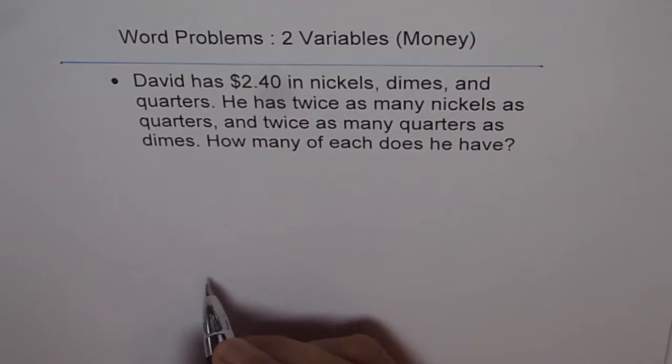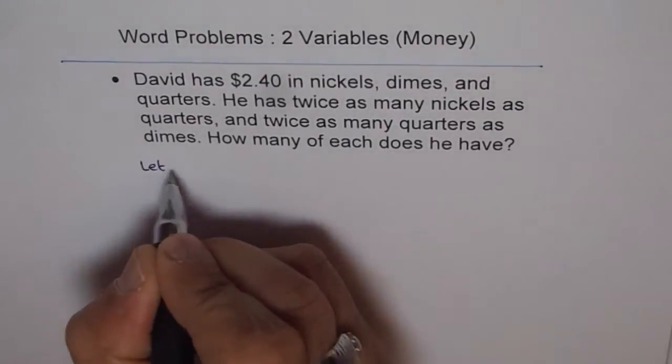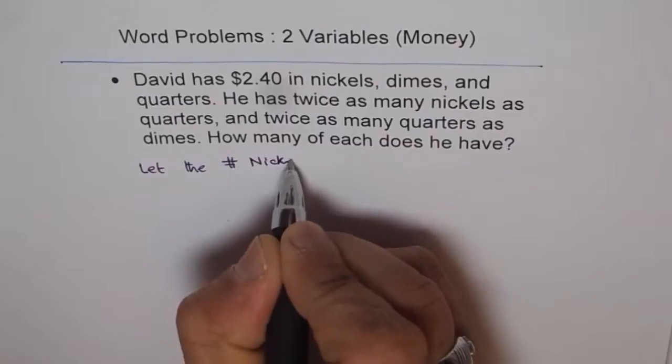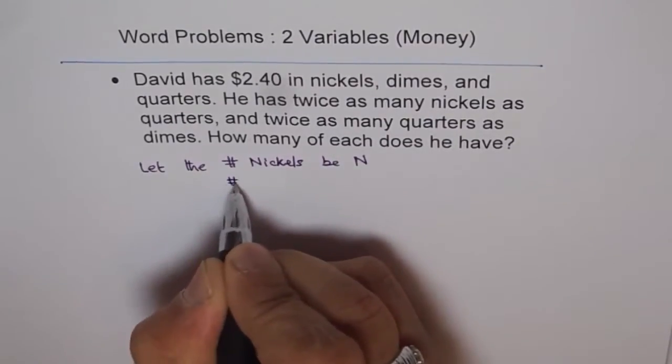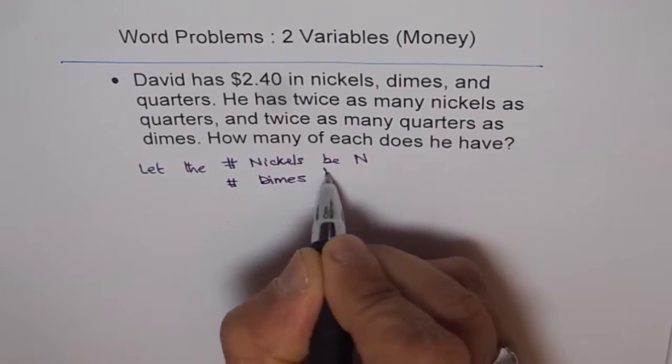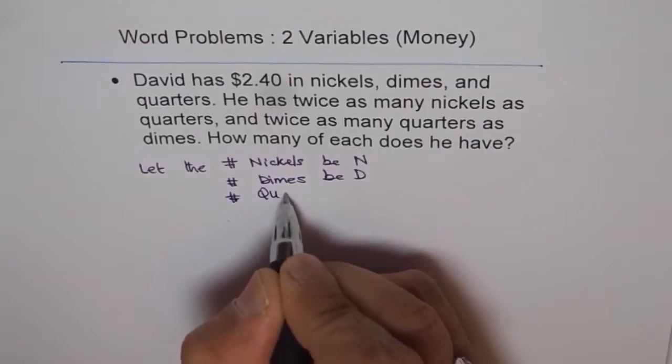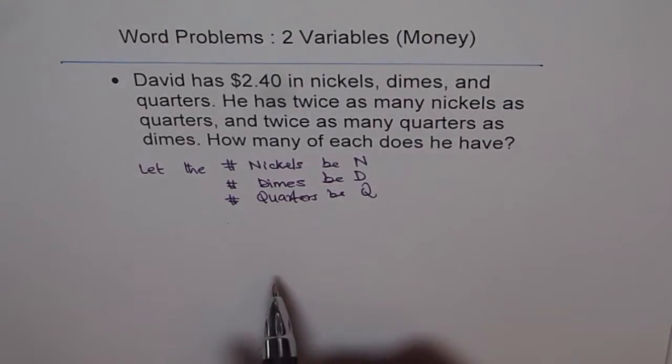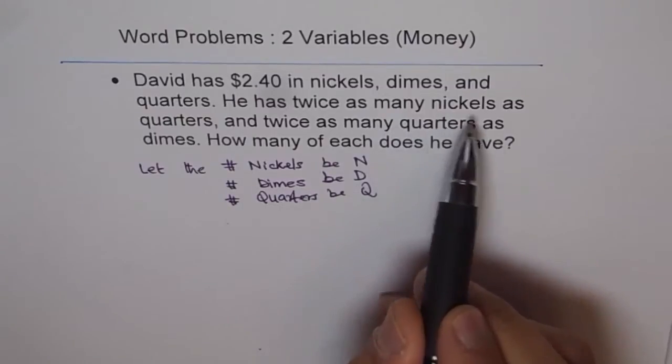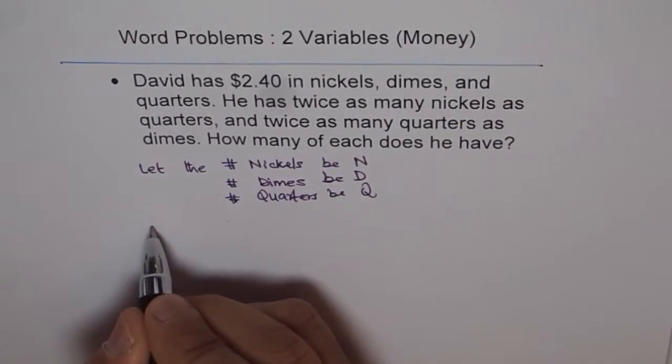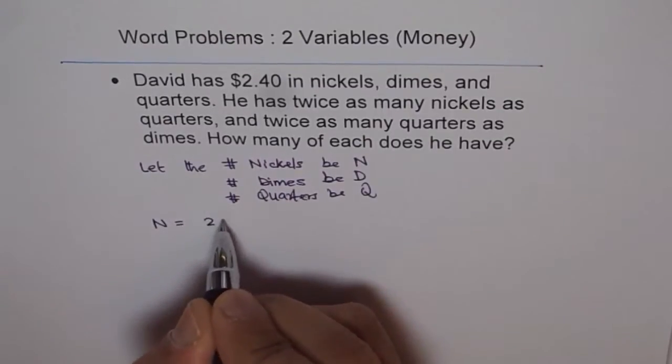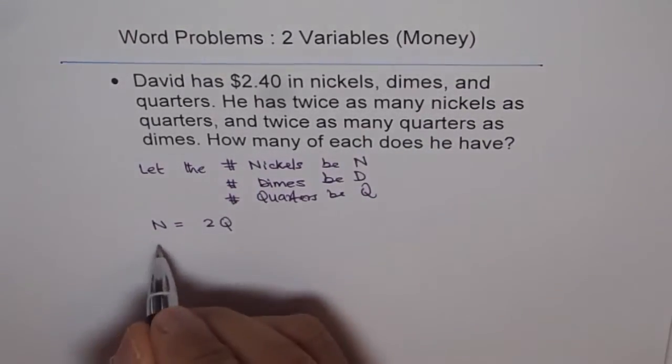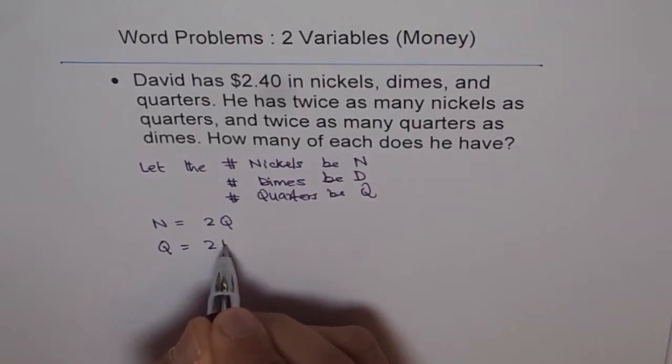So that's interesting. Let's first define our variables. Let the number of nickels be N, let the number of dimes be D, and let the number of quarters be Q. Now it says he has twice as many nickels as quarters. So we have one equation which says N equals 2Q. And twice as many quarters as dimes, so Q equals 2D. So we get two equations here.